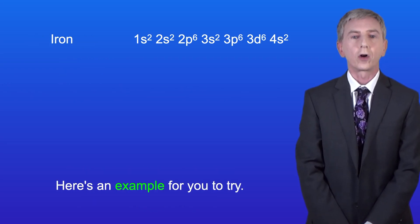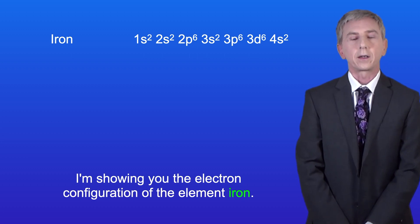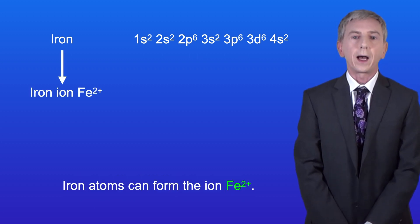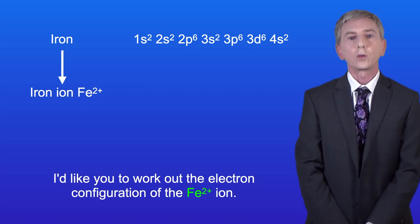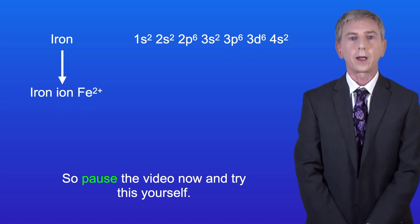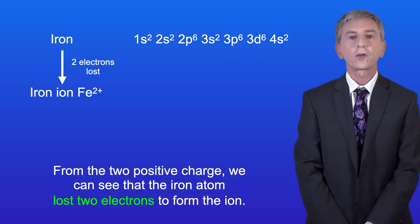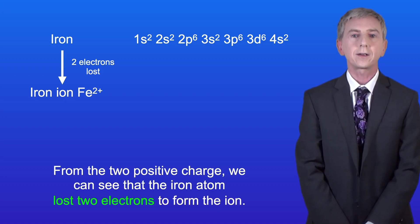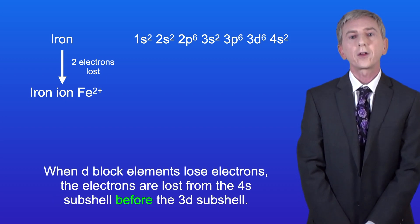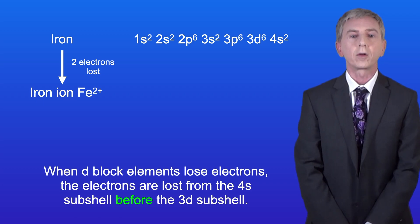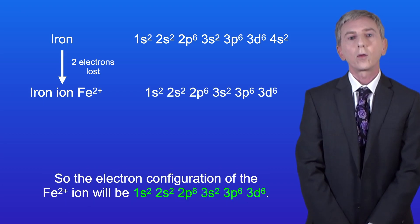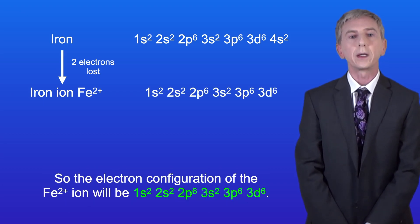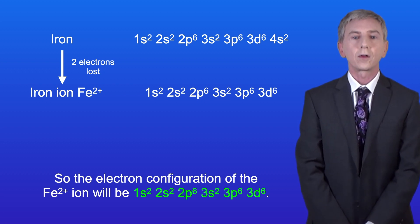Here's an example for you to try. I'm showing you the electron configuration of the element iron. Iron atoms can form the ion Fe2+. I'd like you to work out the electron configuration of the Fe2+ ion, so pause the video now and try this yourself. From the two positive charge we can see that the iron atom lost two electrons to form the ion. When d-block elements lose electrons, the electrons are lost from the 4s subshell before the 3d subshell. So the electron configuration of the Fe2+ ion will be 1s2, 2s2, 2p6, 3s2, 3p6, 3d6.